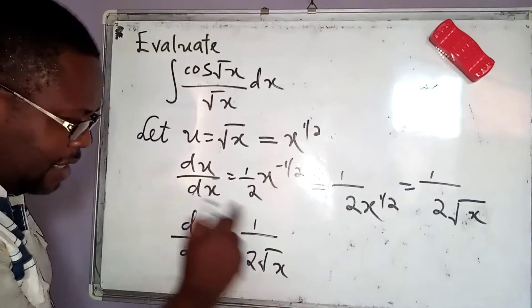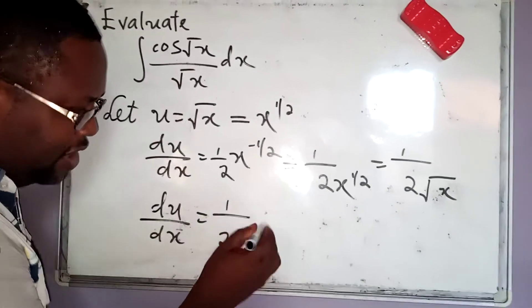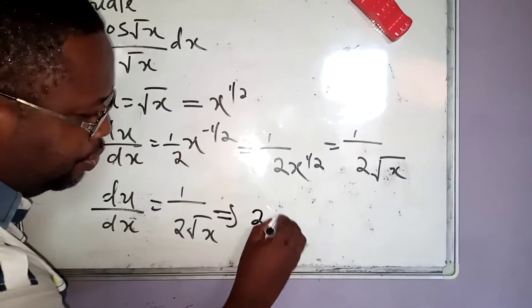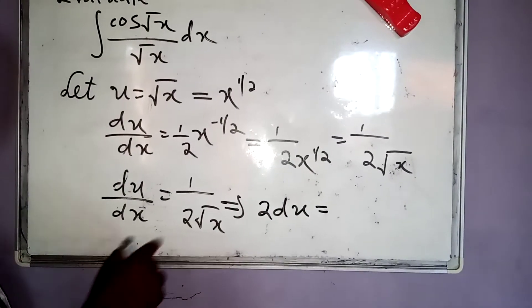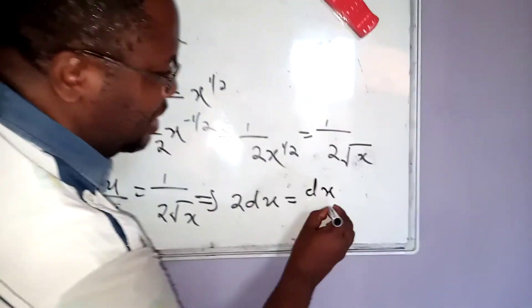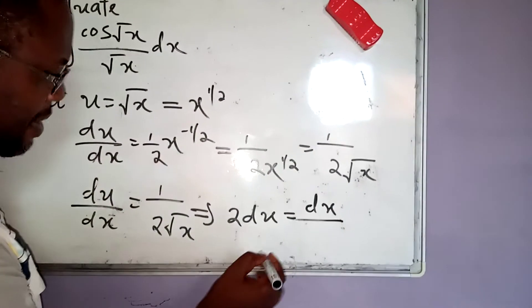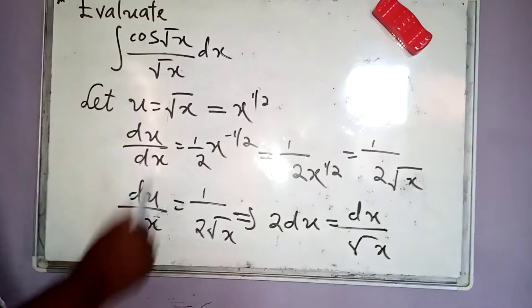When I come here, I need to get something out of this place, the dx over root of x. I move the x up and take 2 this way. This implies that 2 du simply becomes equal to, that is 2 multiplied by this, which becomes equal to dx divided by square root of x. So that is the dx over root of x.